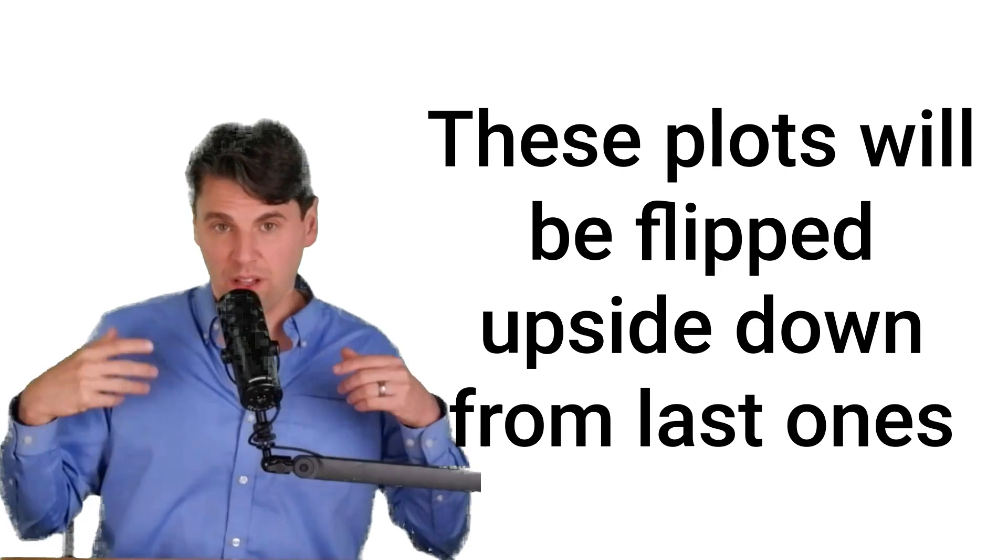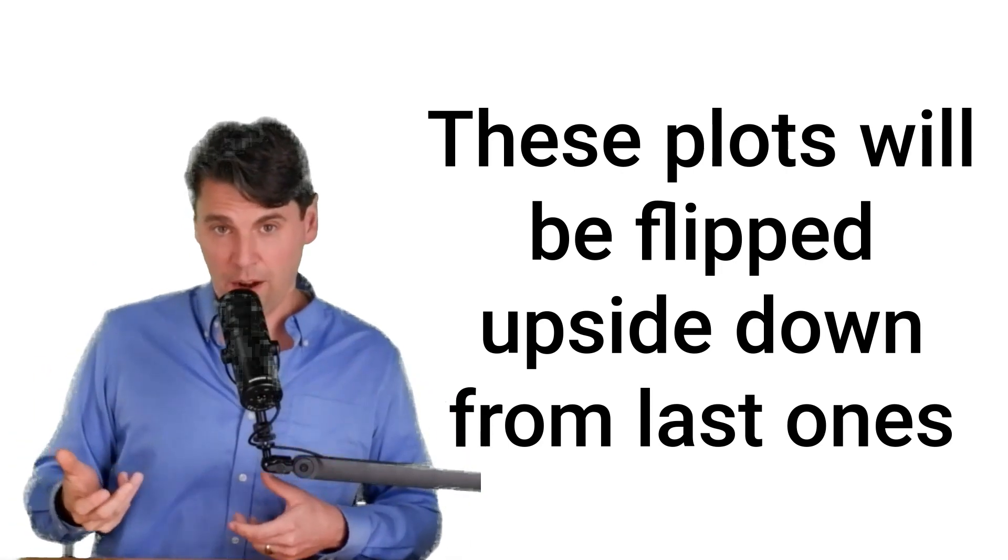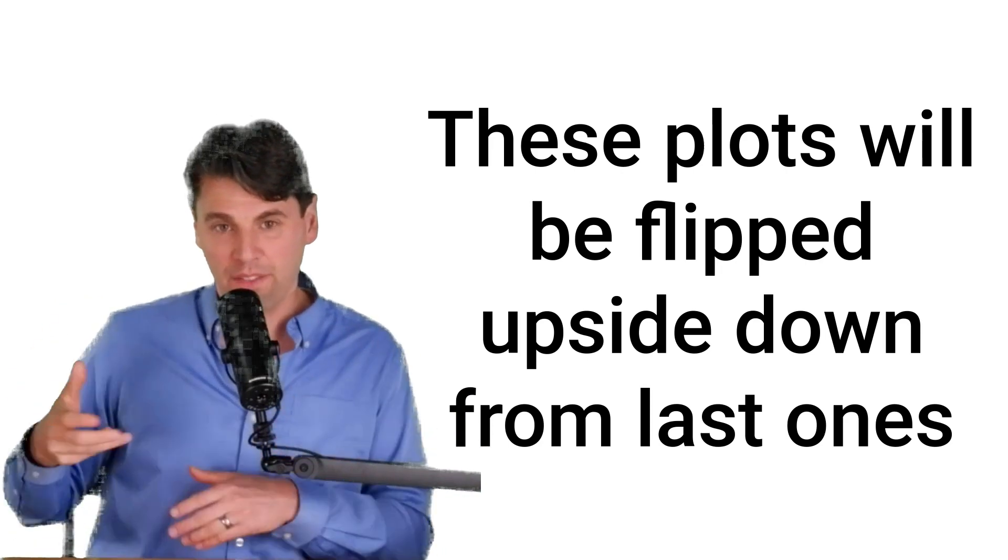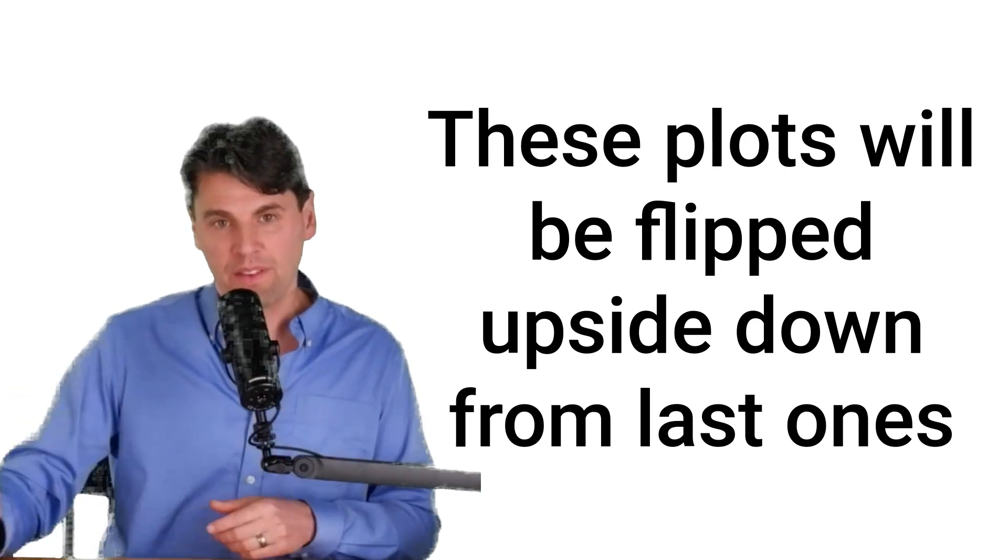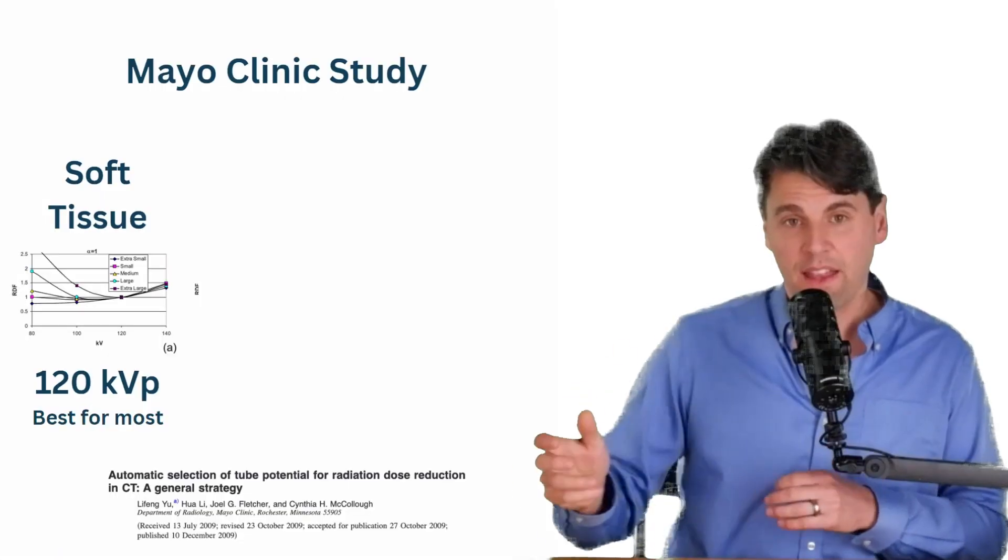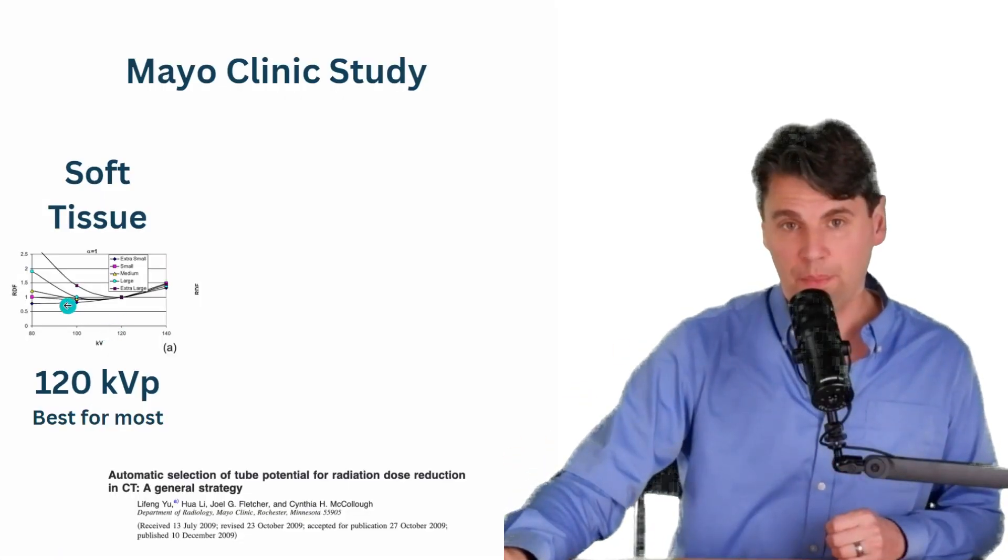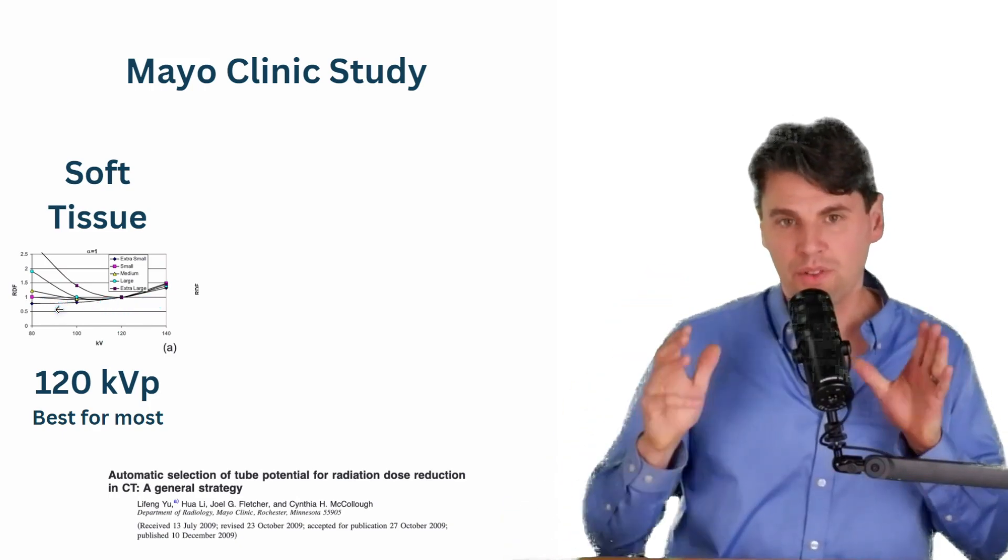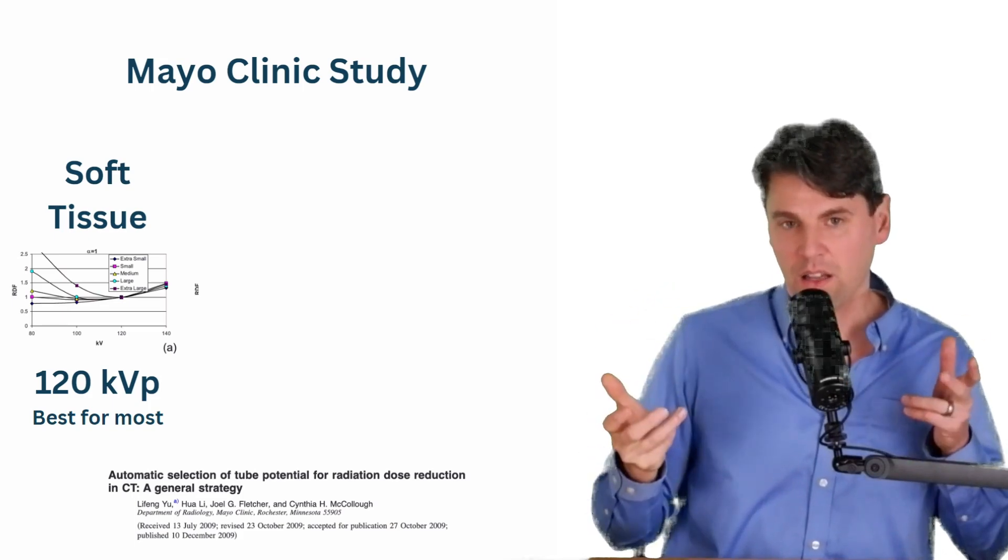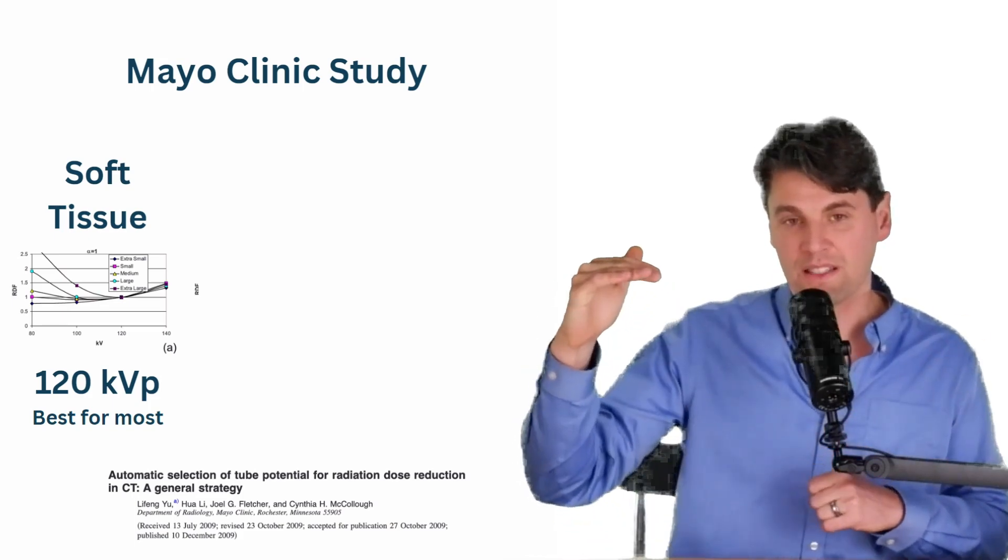In the case of the Mayo study, they actually looked at basically the square of what Willie was looking at. And they did it normalized to a given reference KVP. So in this case, 120 KVP was the reference. And then for all the other KVPs, a relative number was applied, which is basically how much dose is going to be expended in order to get that same CNR. So if you got a number which is less than one, that's good, because it's less dose that you have to use.